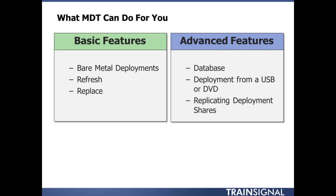Deploying from a USB or DVD — this is fantastic. The media feature allows you to deploy the entire operating system image along with any applications, drivers, or packages you'd like to add, deploying it from USB or DVD with no network connectivity to your MDT deployment server at all. The last advanced feature is replicating either portions of your deployment share or the entire deployment share to a machine in a branch office, so they can perform deployments locally without crossing sometimes unreliable WAN links to the corporate headquarters. These are called linked deployment shares.